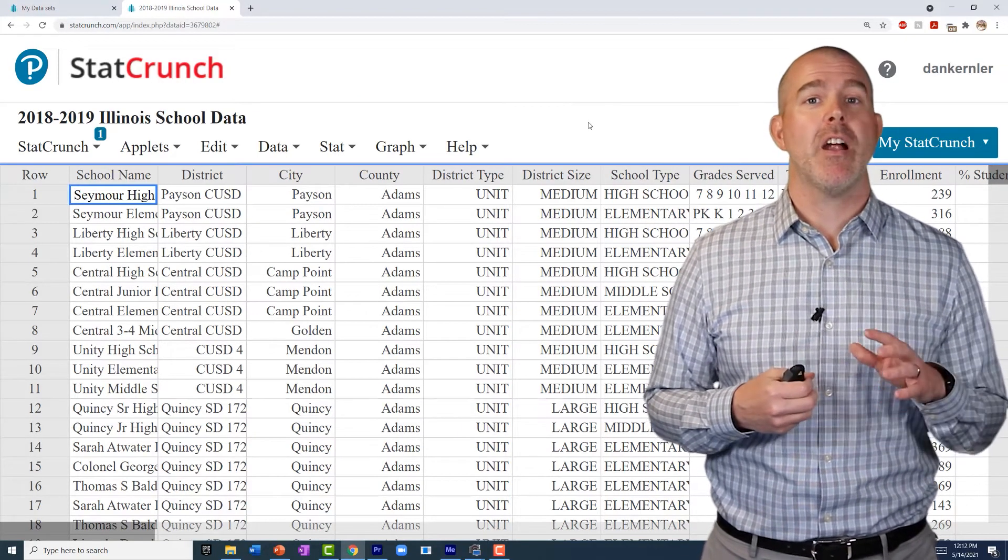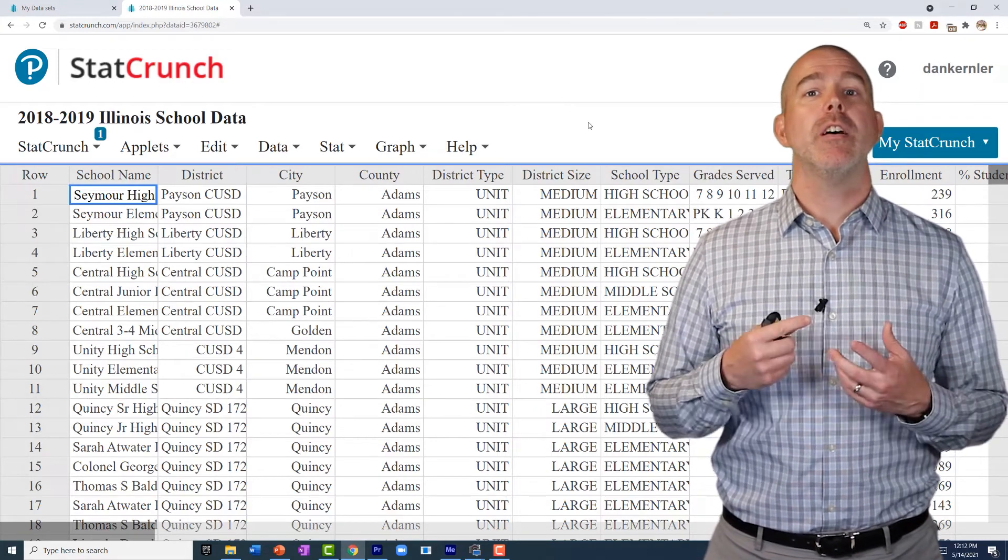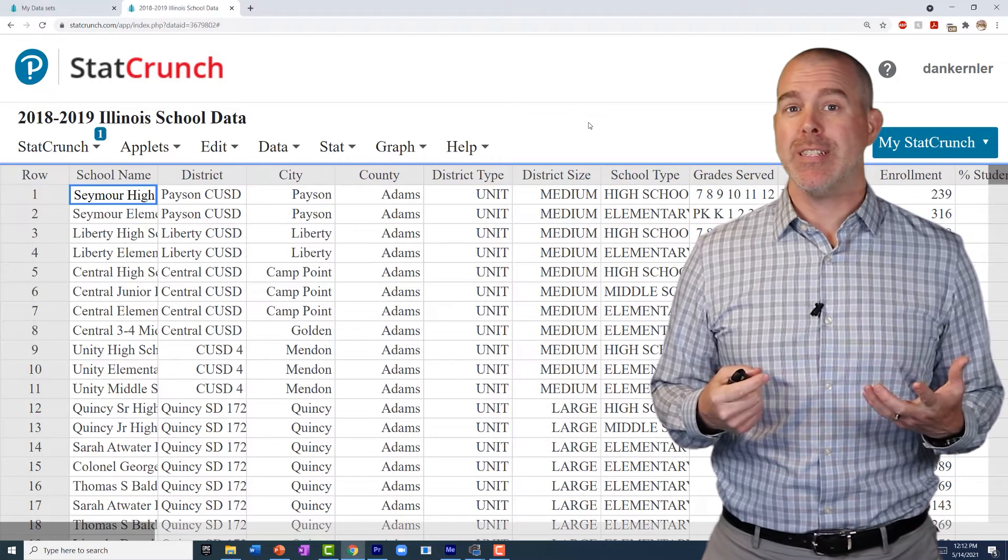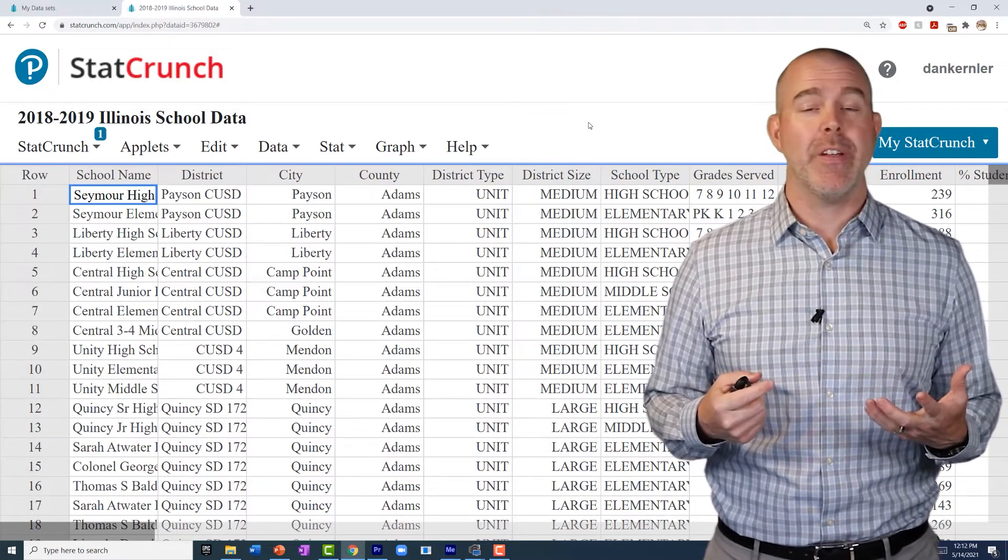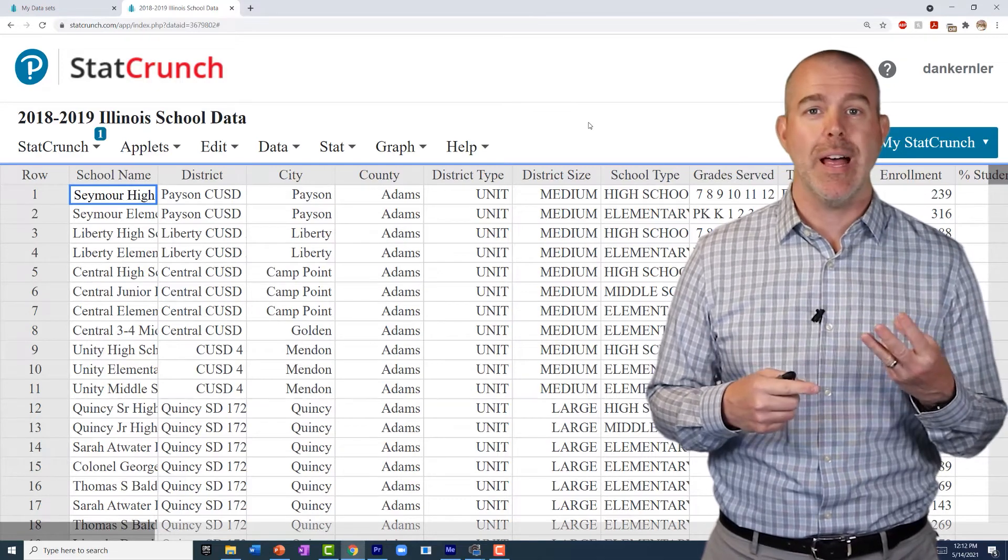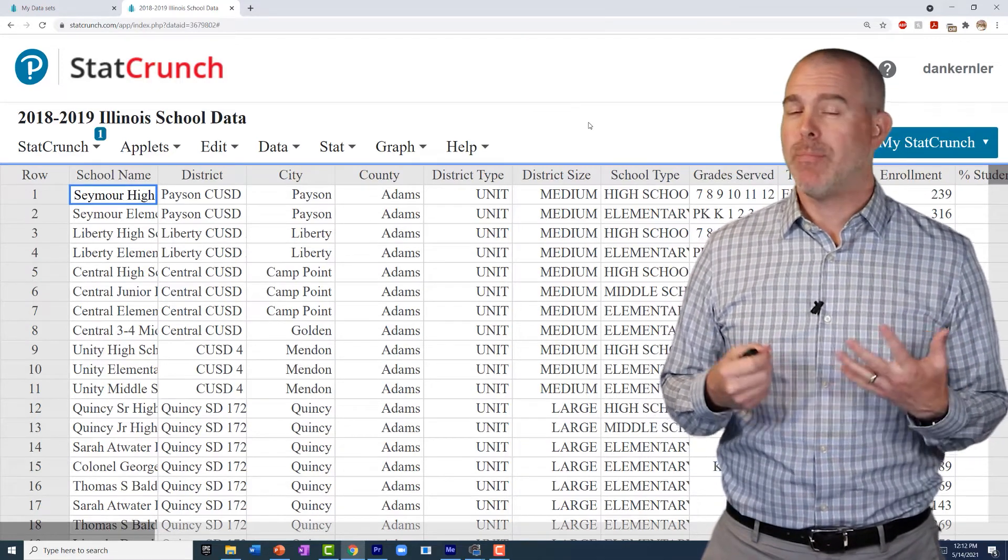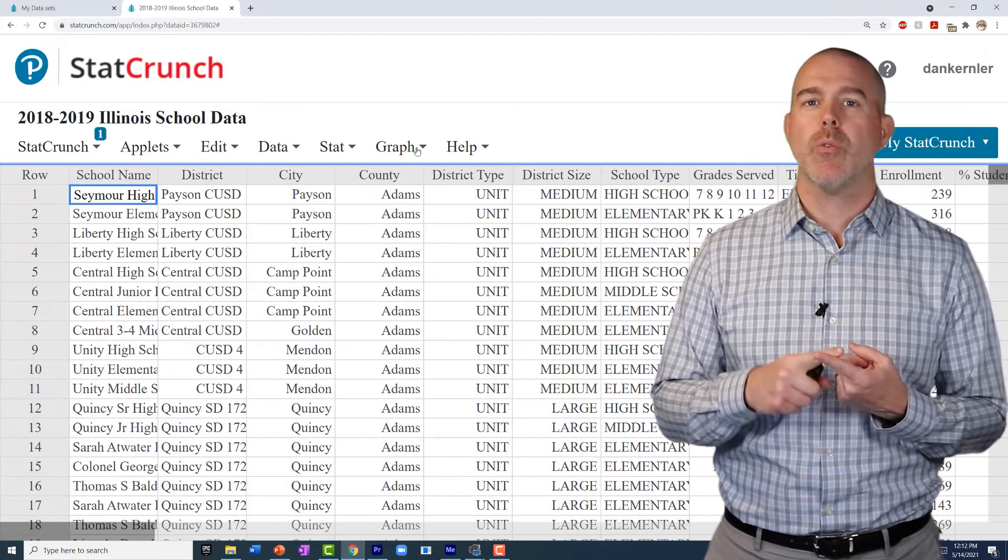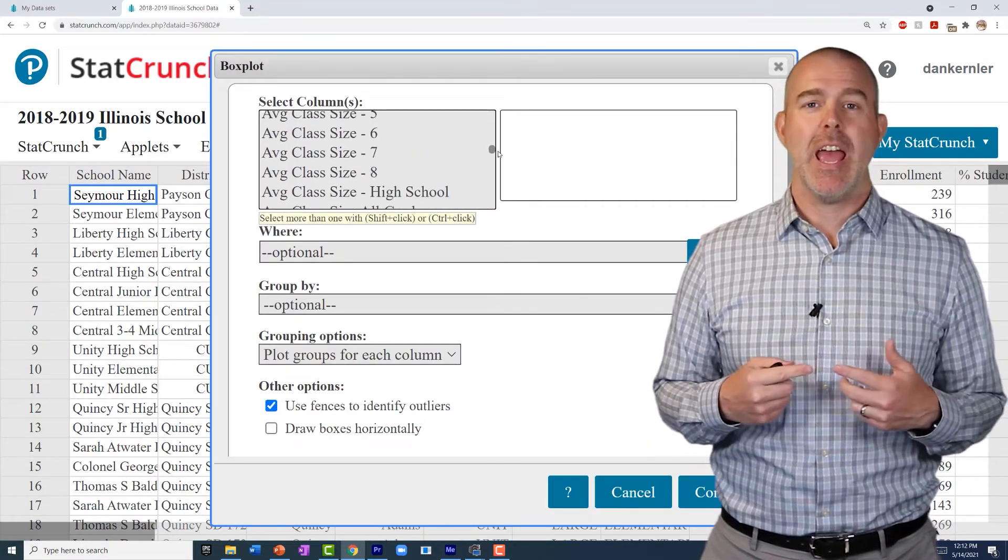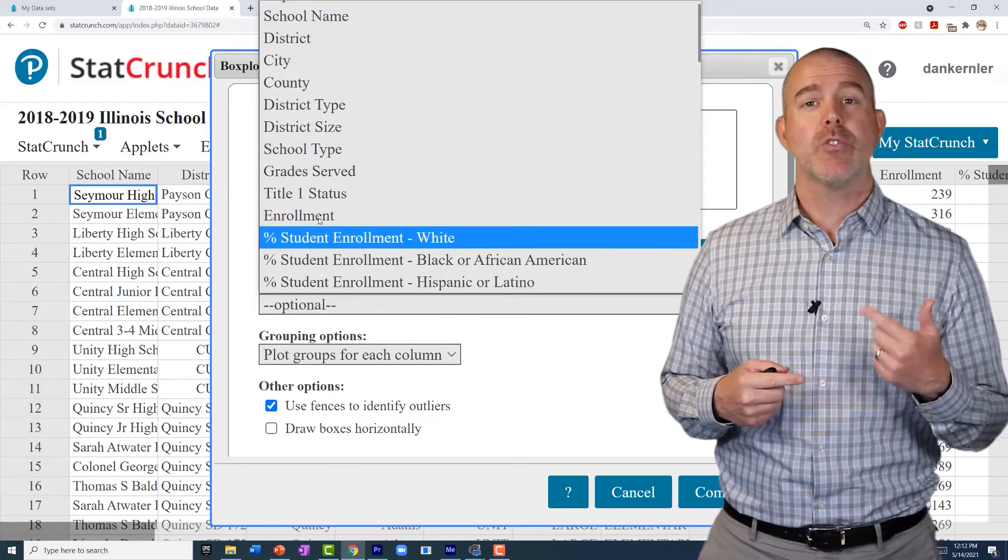Another interesting variable to look at is in our school data. There's a variable in there called the average class size. So one thing you might be interested in is how does that average class size vary by the school type, whether it's an elementary school, a charter school, high school, etc. So let's do that. This one is pretty straightforward. We're just going to do Graph, Box Plot, and we're going to choose average class size. And then we'll do group by school type.